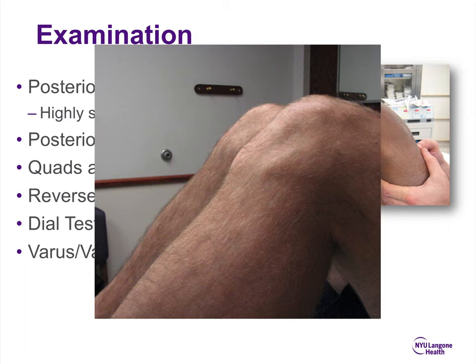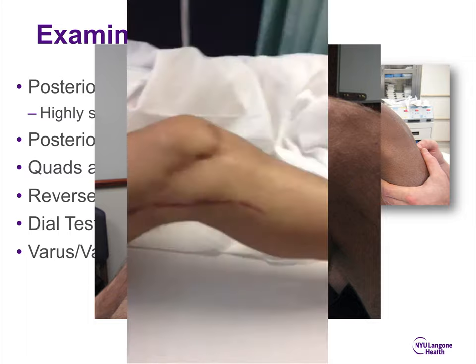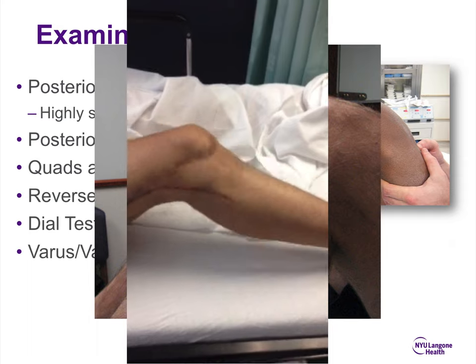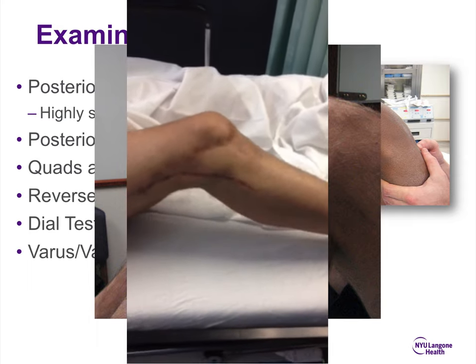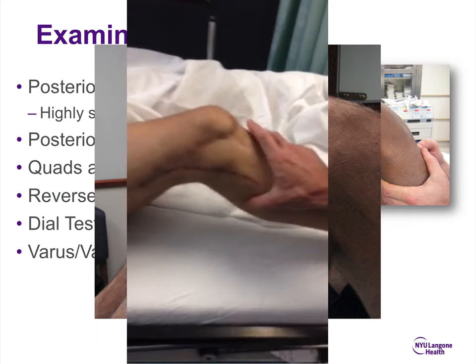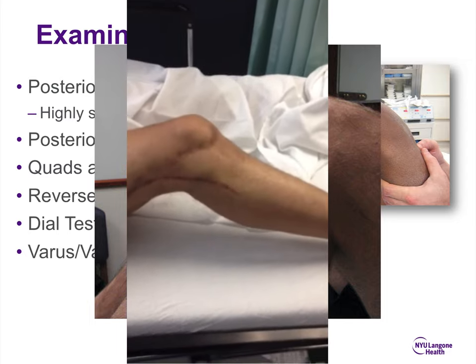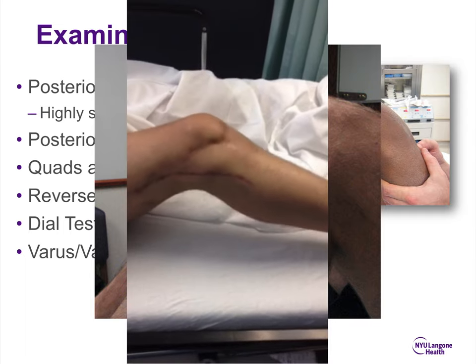This is a posterior sag sign — the knee on the left shows posterior sag compared to the right; the left has a grade 2 to 3 injury. This is the quadriceps active test, where the patient fires their quadriceps with the knee flexed to about 60 to 70 degrees, and you can see the tibia sitting posterior and then auto-reducing.